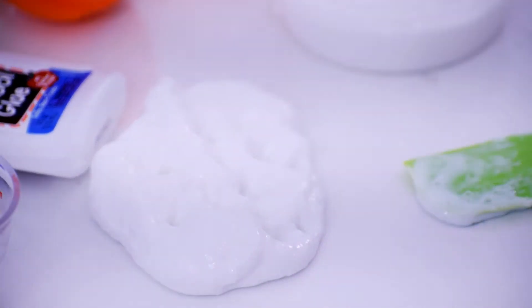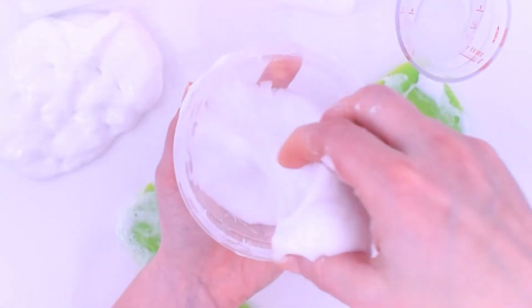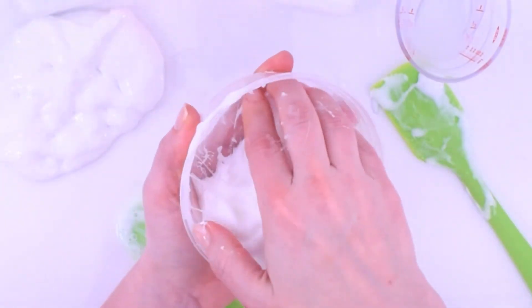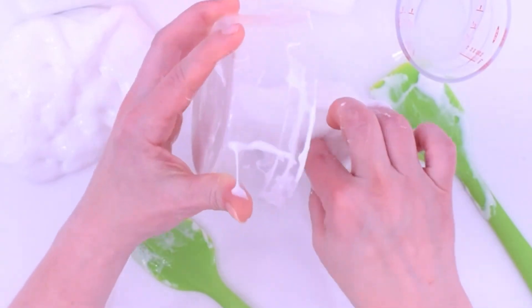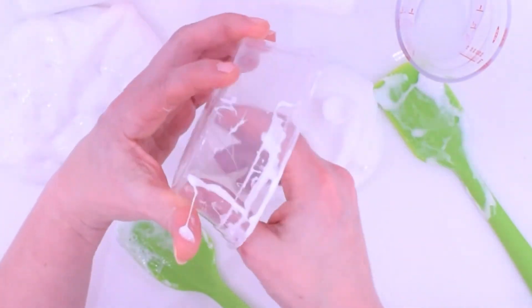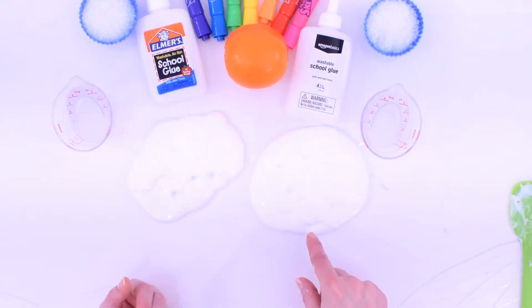Okay, so Elmer's is done, and let's look at Amazon. It's pretty done. For Amazon, I had to use two and a half tablespoons of Sta-Flo activator, and for Elmer's I only had to use about two tablespoons of activator.